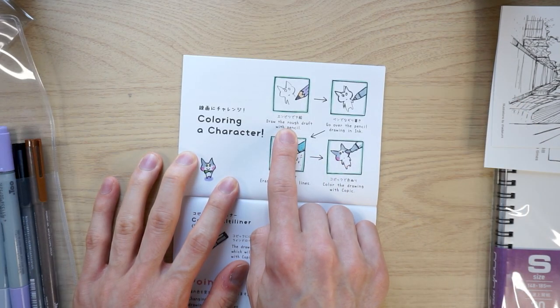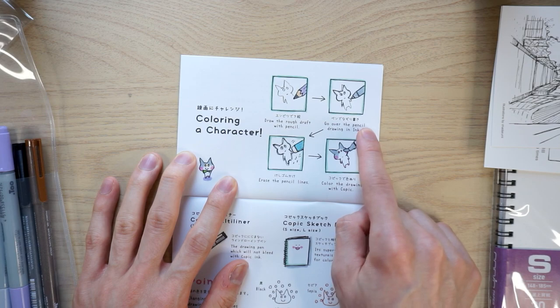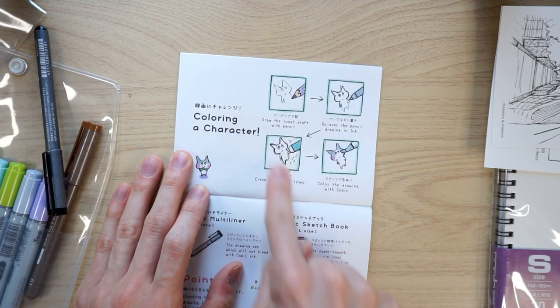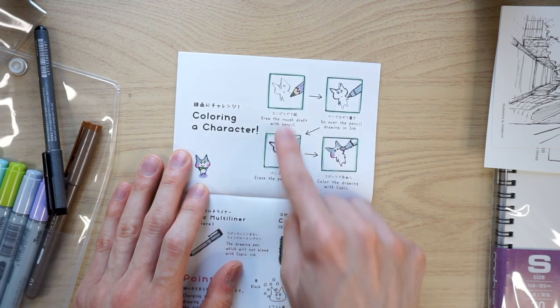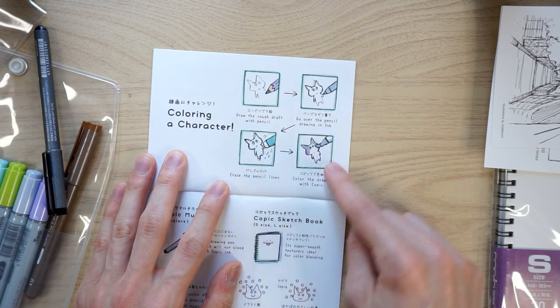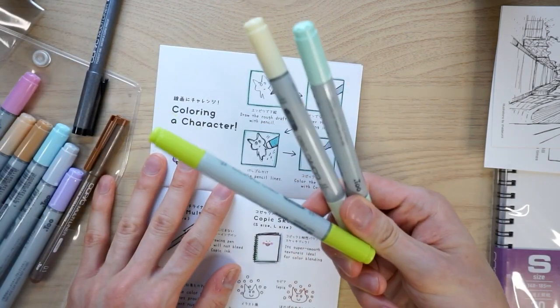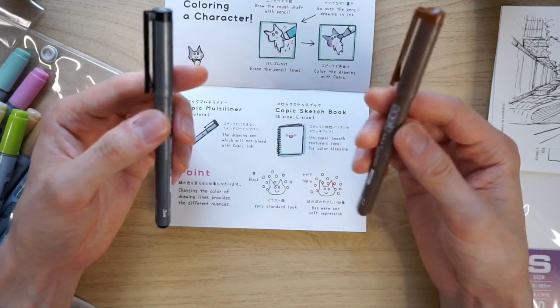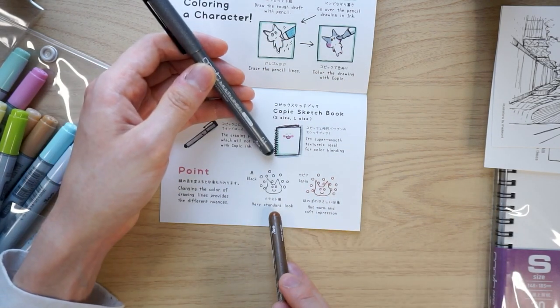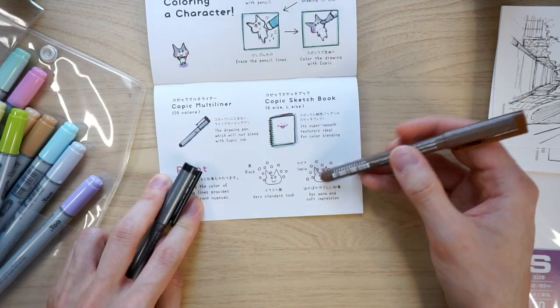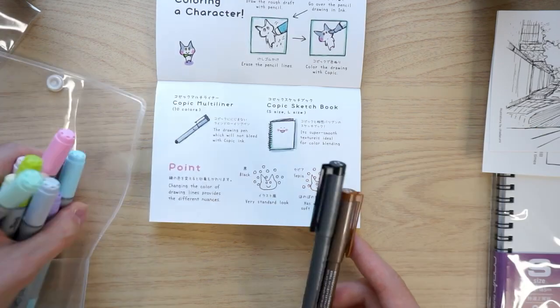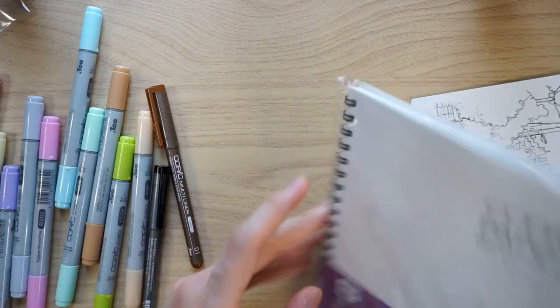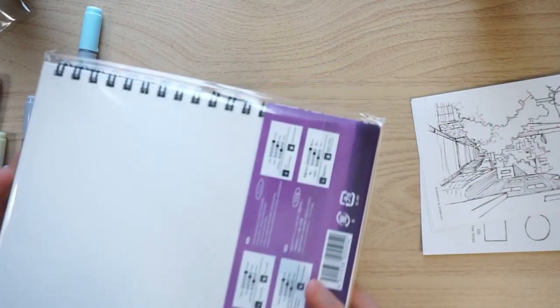Step one, draw with a pencil. Step two, go over the pencil with ink, which is included here. We've got these multi-liner pens. Step three, erase the pencil lines because obviously the pen won't get erased, only the pencil lines will get erased. And then step four, color in with these gorgeous Copic markers. And it even gives you a little tip if you're trying to decide whether you want to use this black multi-liner or this sepia multi-liner. The black one will give you a very standard look. And the sepia pen will give you a warm and soft impression. Well, I don't know about you, but I am super ready to get these pens out and start coloring. Woohoo!